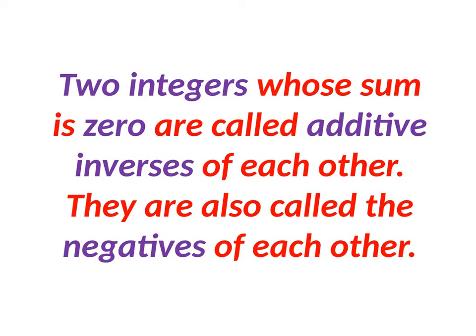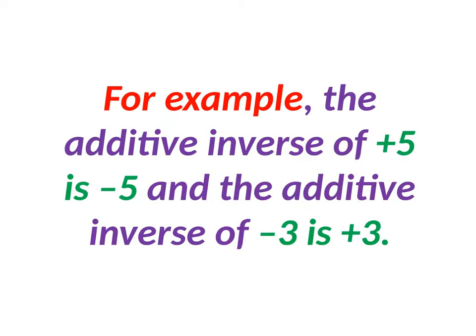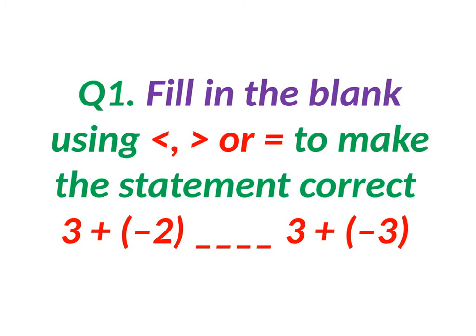Two integers whose sum is 0 are called additive inverse of each other. They are also called negatives of each other. For example, the additive inverse of plus 5 is minus 5. The same way, the additive inverse of minus 3 is plus 3.